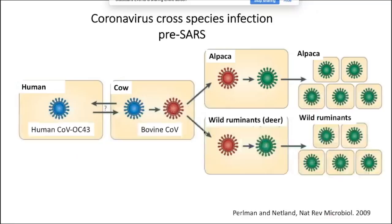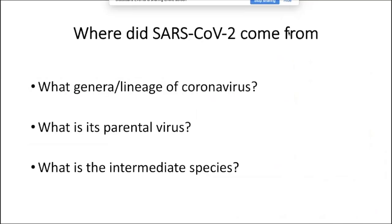Cross-species infection is not only a characteristic of these lethal human viruses. Human coronavirus OC43 is very closely related to bovine coronavirus, and these viruses are also closely related to mouse hepatitis virus. We imagine that a virus acclimated to cows and was then able to infect alpacas and wild ruminants, where it probably adapted to grow in each of those species. So cross-species infection is quite common among coronaviruses, and there are many other examples as well.